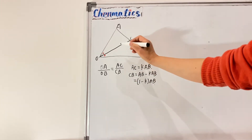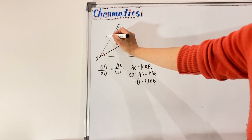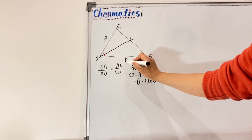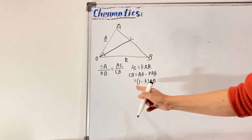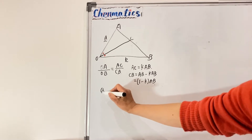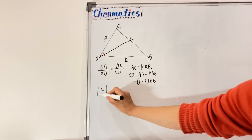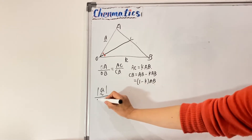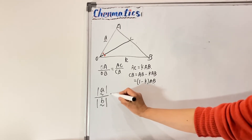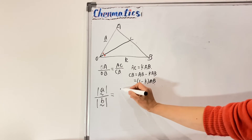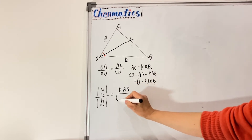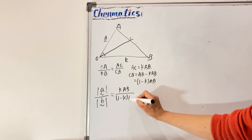If I let OA be position vector A and OB be position vector B, then the question transfers to proving that the magnitude of vector A over the magnitude of vector B equals K times AB over (1 minus K) times AB.